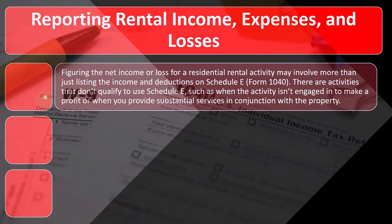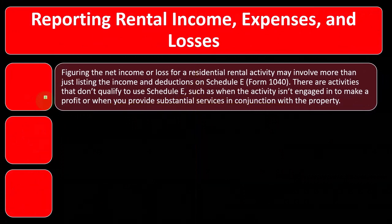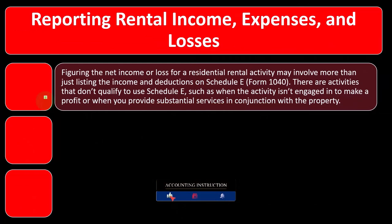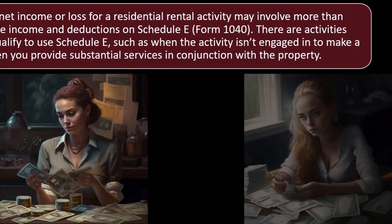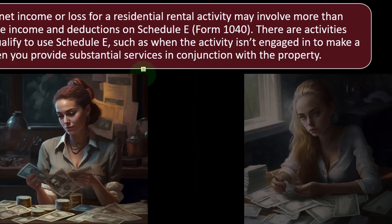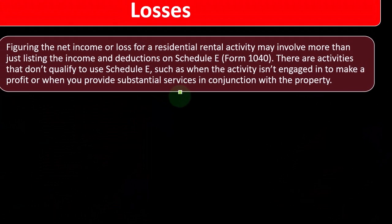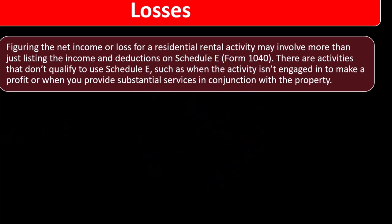There are activities that don't qualify to use Schedule E, such as when the activity isn't engaged in to make a profit, or when you provide substantial services in conjunction with the property. If it's not engaged in for profit, the IRS doesn't want to allow hobby losses. If there are substantial services involved — like operating a hotel — then you're not just passively collecting rent. You're actively maintaining the property, which would make it more like a Schedule C situation, potentially subject to self-employment tax.